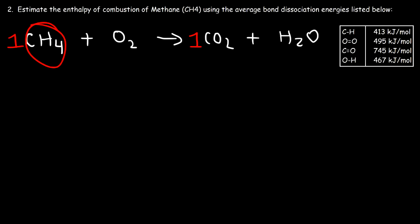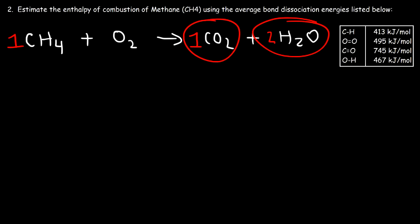We have four hydrogen atoms on the left so we put a two in front of H₂O. We have a total of four oxygen atoms on the right side so we put a two in front of O₂. Now the reaction is balanced. Just like before, we're going to use the same equation.